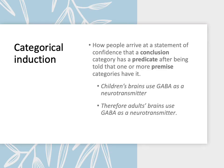How does categorical induction work? It's really a study of how people arrive at a statement of confidence that a conclusion category has a predicate or feature after being told that one or more premise categories also have the feature. Conclusions are things that are drawn from observations. Predicates are the features or properties that objects have, and premises are lists of statements about whether individuals or objects have predicates.